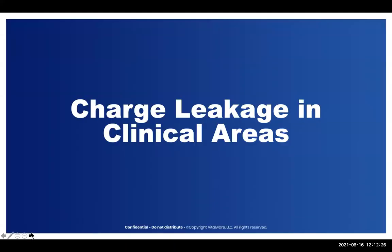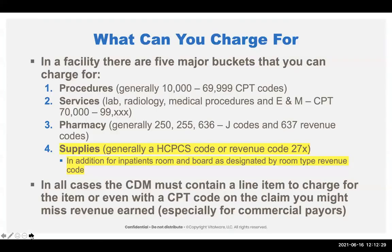Now we've gone through registration and admitting, and we're going to start looking in the clinical areas. There are four things you can charge for: procedures, which are generally coded by HIM; services such as lab, radiology, and physiotherapy — the 70,000 through 99,000 CPT range — generally done by the charge master; pharmacy, also done by the charge master and usually a pharmacy system; and today we're going to focus on supplies, in addition to room and board.